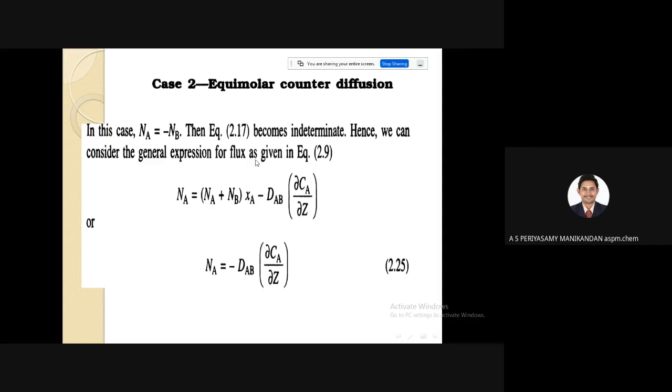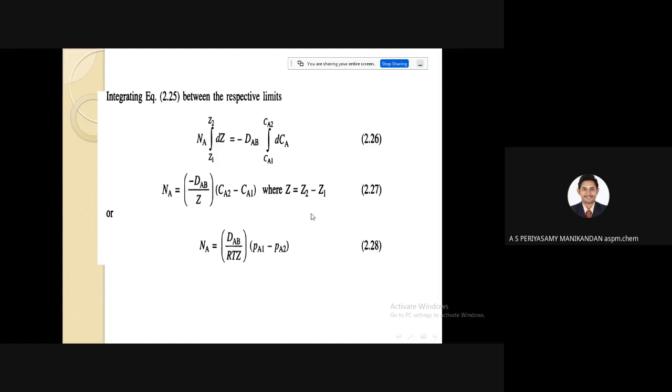In the second case, if both the components are diffusing then it becomes equimolar counterdiffusion. Then in this case you have to use this equation instead of the previous equation because Nb is not zero. In this case Na equals minus Nb. If you substitute you will get Na equals minus Dab into dCa by dz and if you integrate and apply this equation, you can get Na equals Dab by zRT into Pa1 minus Pa2.